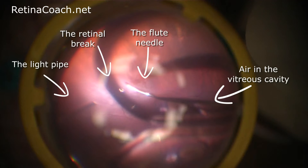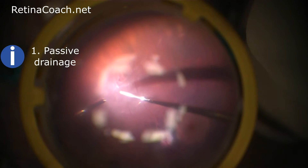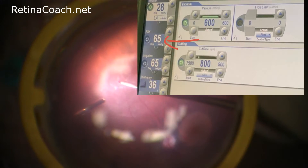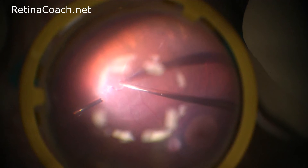There are a few options to drain fluid during fluid-air exchange. The first one is passive drainage by fluid needle. In this case, air infusion pressure should be elevated to higher levels to allow passive drainage.